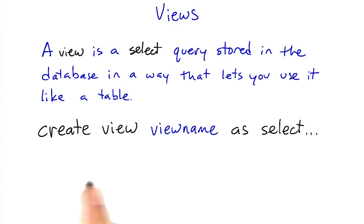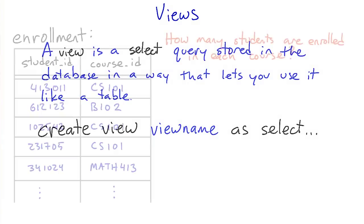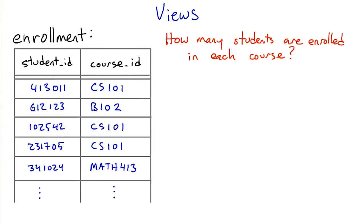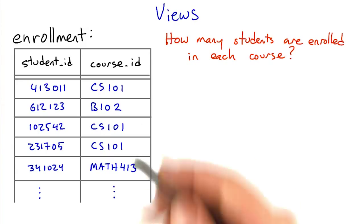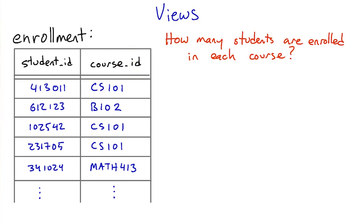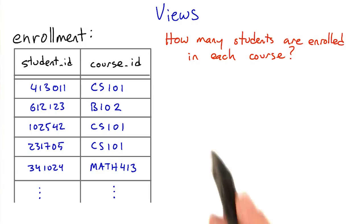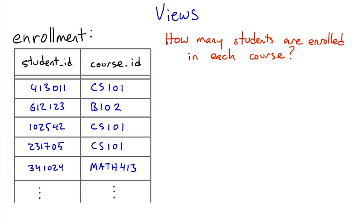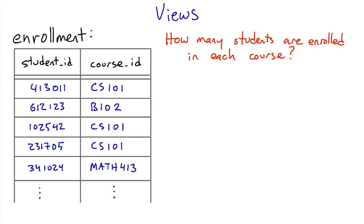Here's the syntax for the CREATE VIEW command. Views are really useful with aggregations like counts or sums. For instance, if we have a table of students enrolled in courses and we want to know how many students are in each course, we can find that out with an aggregation. And if we're going to use that query a lot, we can store it in a view.